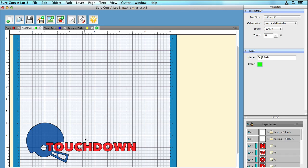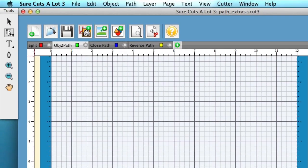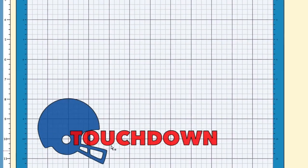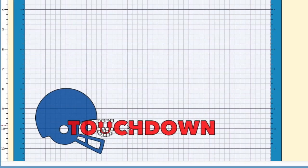You may ask yourself: why would I want to convert text to a path? Basically, if you use your shape tool, you would be able to actually modify the nodes on the text. That would be one reason why you'd want to convert your text to a path — though you do lose the ability to use your text tool to edit the text.